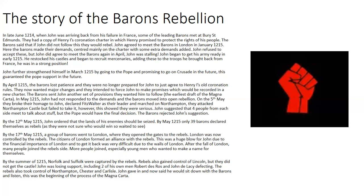After the fall of London, many more people joined the rebel side — especially young men wanting to make a name for themselves. By the summer of 1215, Norfolk and Suffolk were captured by the rebels, who also gained control of Lincoln, though not the castle. John was losing support significantly, including two of his own men — Robert de Ros and John de Lacy — who defected to the rebels. The rebels also took control of Northampton, Chester, and Carlisle, and John finally reached his breaking point and agreed to sit down with the barons.